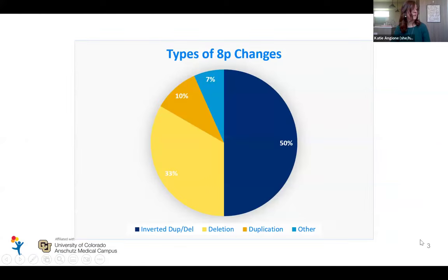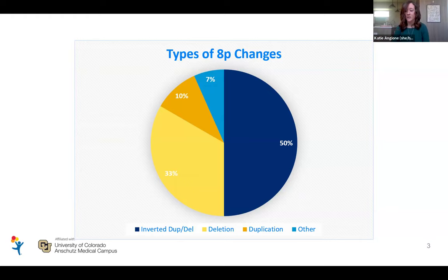Today we have seen 30 patients with different types of 8P changes. About half of them have inverted duplication deletion syndrome. About a third of patients have deletions. We have three patients so far with duplications, and then a couple with some different changes — one has a mosaic ring 8 with mosaic duplications, and one has an unbalanced translocation that essentially gives them a terminal P terminal deletion and a Q terminal duplication. They're in their own category but have similarities with the duplication patients.